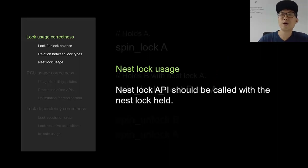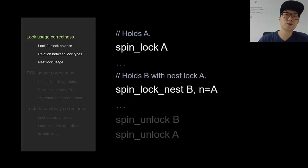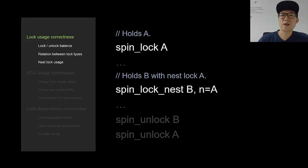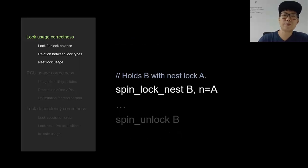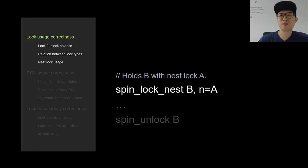The nest lock API should be called with the nest lock already held. When you call spin_lock_nest API, you should specify the nest lock and must already hold it. But if someone uses spin_lock_nest without the nest lock held, that code would be problematic, so LockDev reports it as a problem.